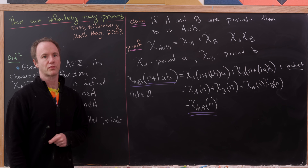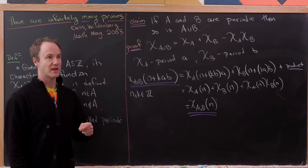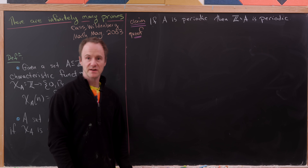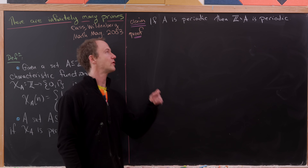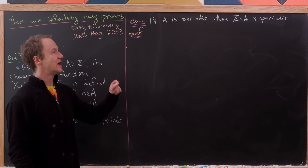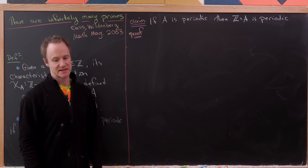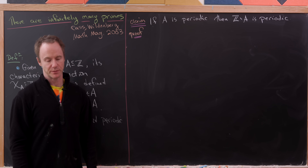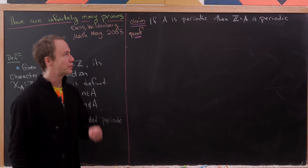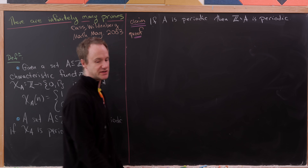We have one more preparatory claim and then we'll prove our main result. For our second claim, we'll prove that if A is periodic, then the complement of A — that is, Z minus A — is also periodic. And this one is actually super fast; there's hardly anything to do.